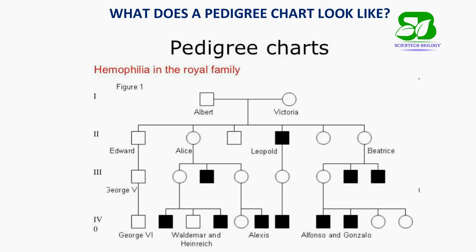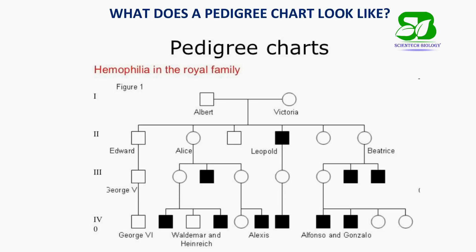Now let's see how a pedigree chart looks. This is a hemophilia pedigree of a royal family. The Roman numerals represent the generation, and you can see how the defective trait has passed from the first to the fourth generation.